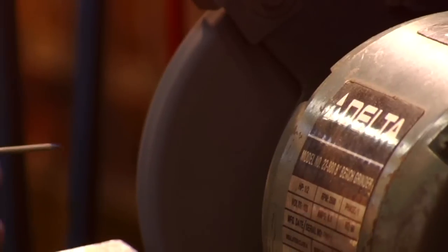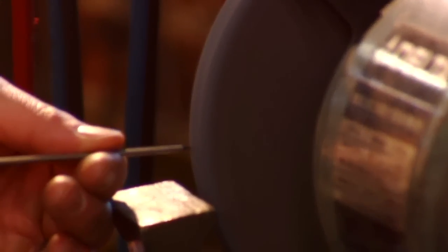However, for aluminum, we would add one more step. We would take the sharpened tungsten and grind off the tip to create a flat spot or land.